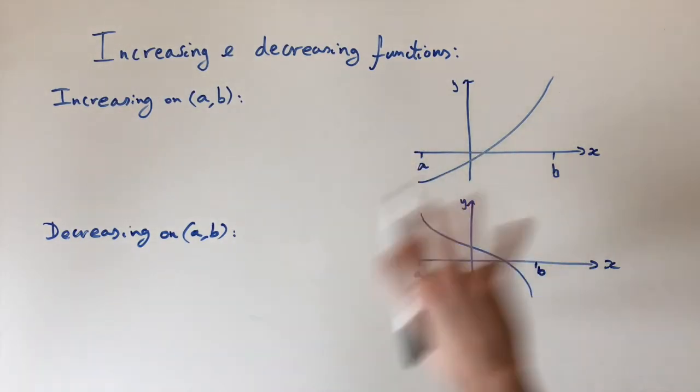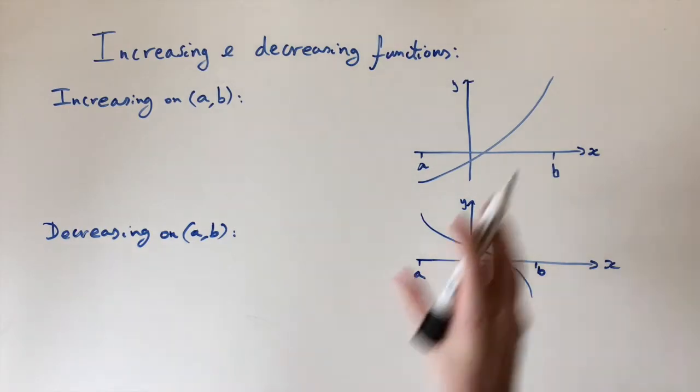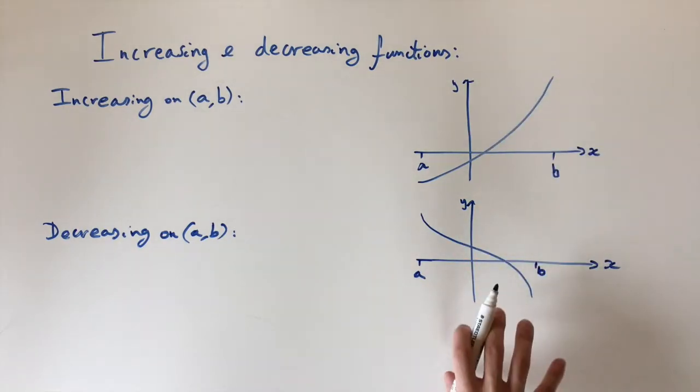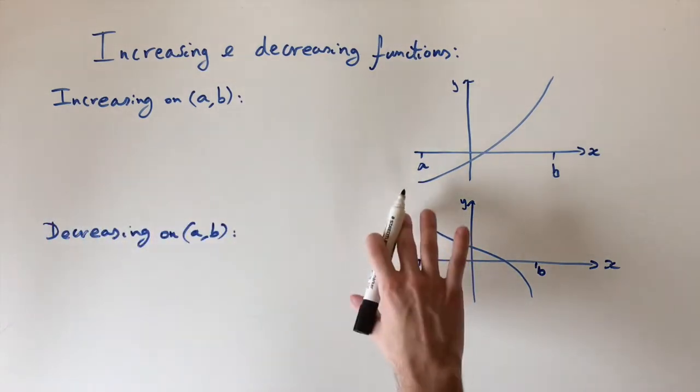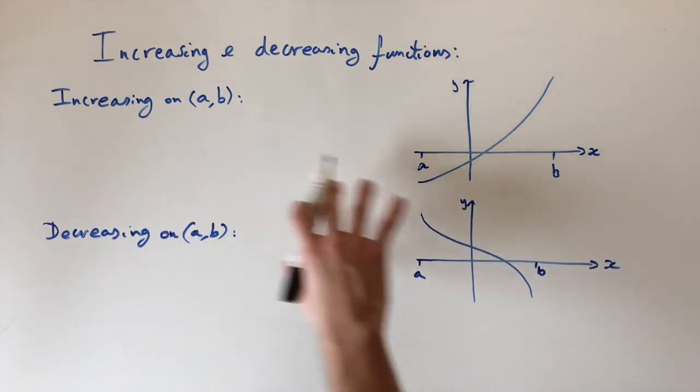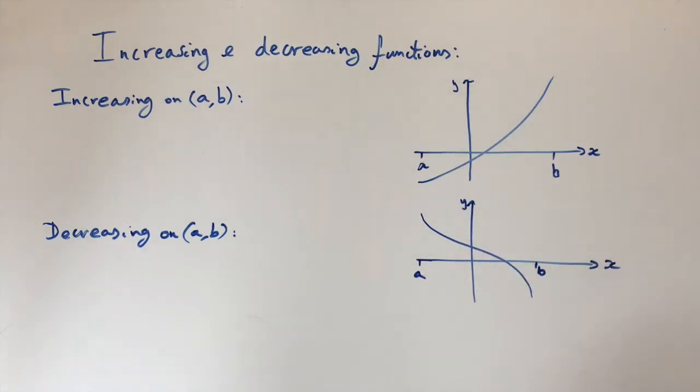So I've got an example here of an increasing function where the graph is always going up and also a decreasing function where the graph is always going down. And we typically think about these properties in an interval so we're looking here at the interval (a,b). So that's kind of the general idea.